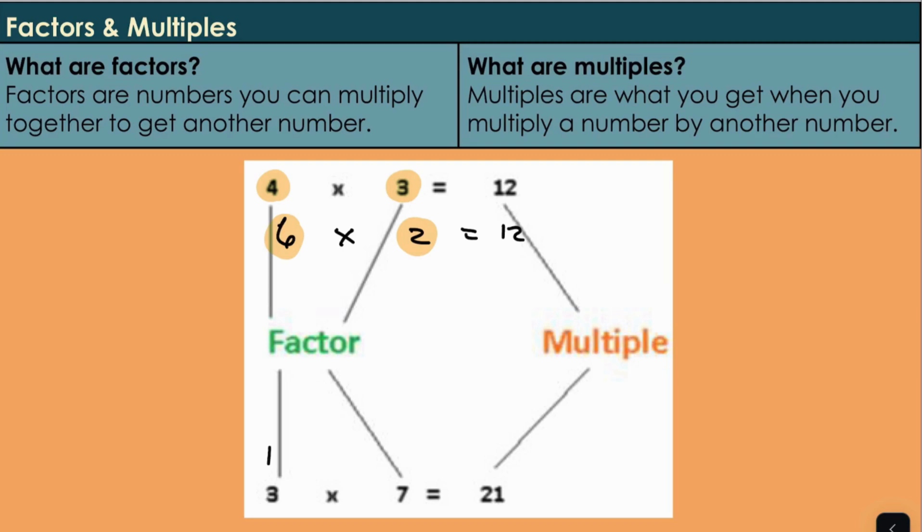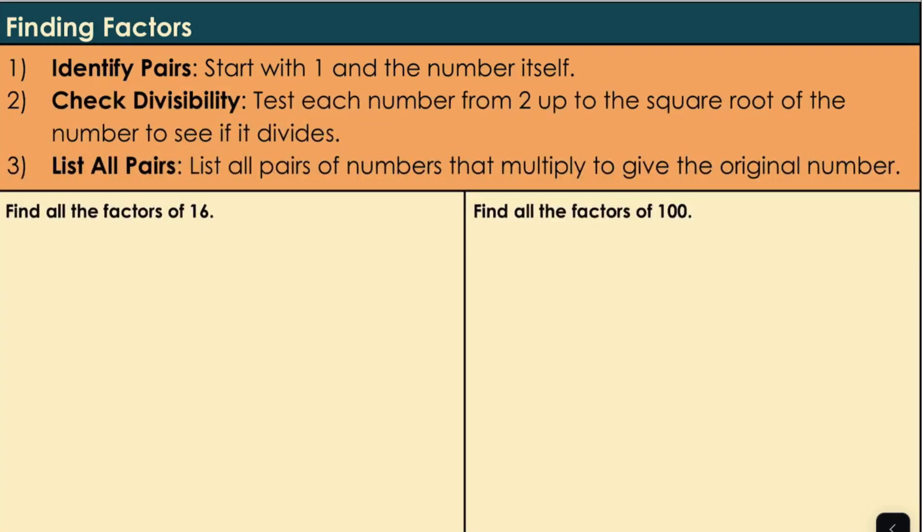What about 21? We know that 1 multiplied by 21 is 21. So again, we have some more examples of factors. We have 1, 21, 3 and 7. So let's discover how to find factors.